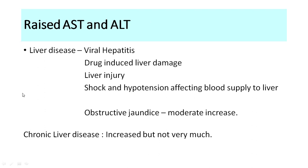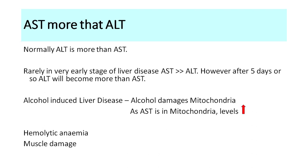In chronic liver disease, both AST and ALT increase, but the level of increase does not match that of bilirubin — a patient may have bilirubin of 20 mg/dL with AST and ALT of only 150–200 IU/L. In acute liver disease, values may reach thousands. Normally, ALT is greater than AST and is considered the better marker for liver damage. However, if the liver injury is very early and the patient presents within five days, AST may be higher; after four to five days, ALT becomes higher.